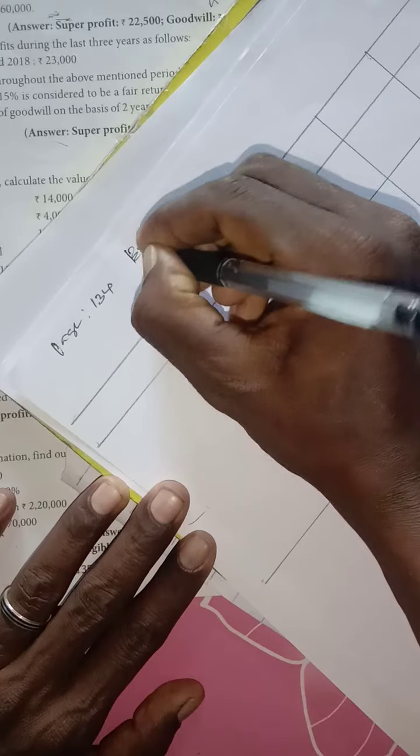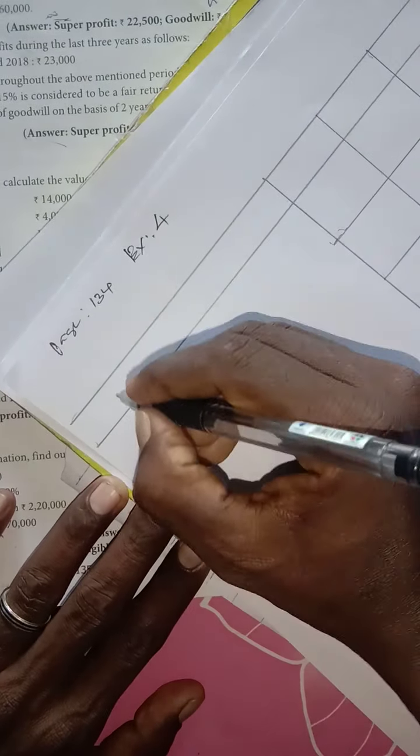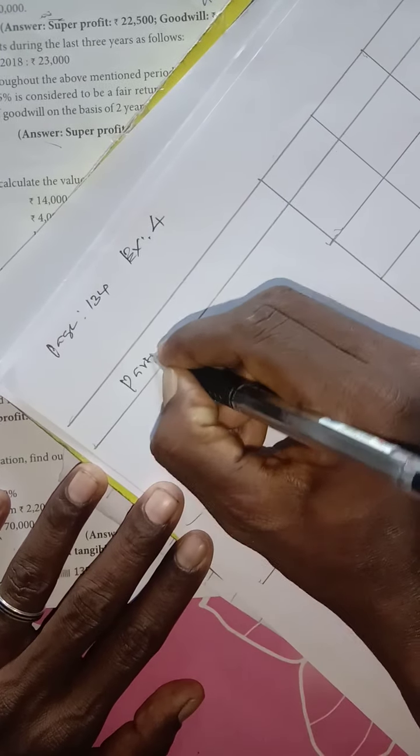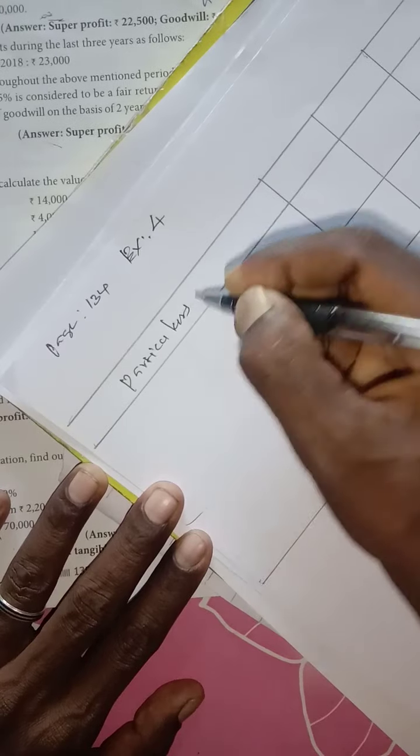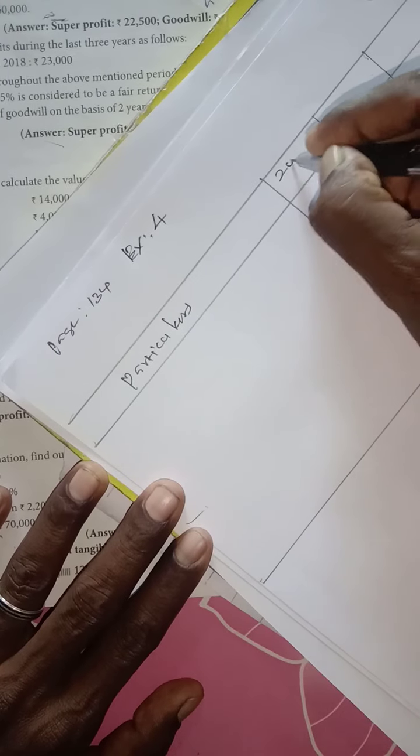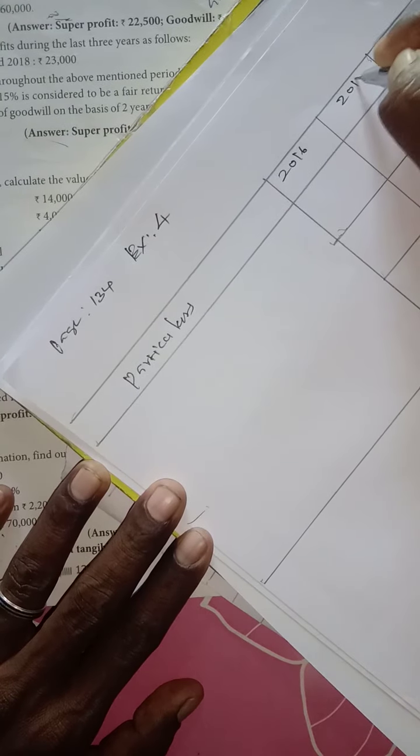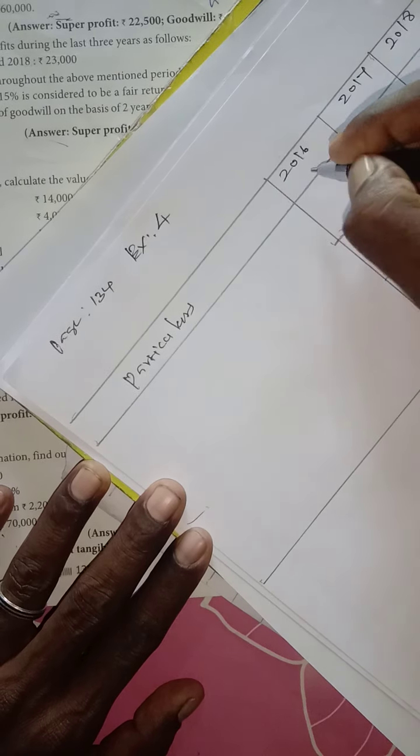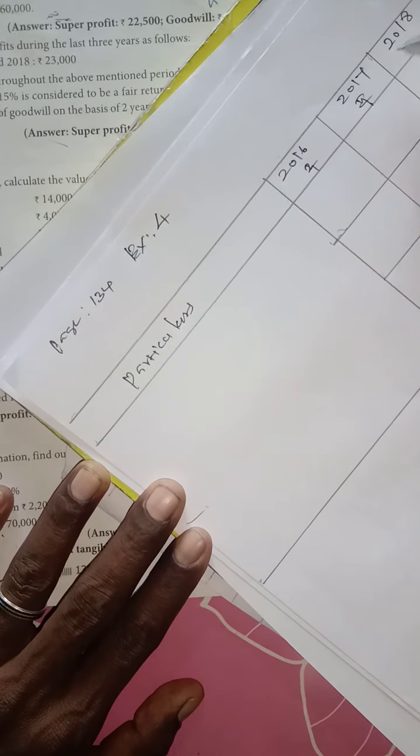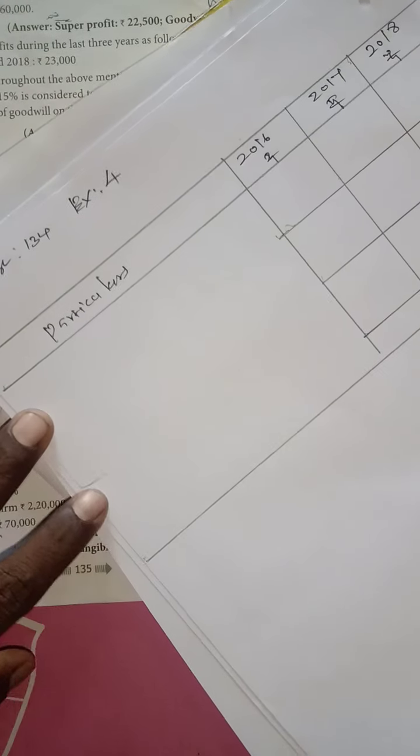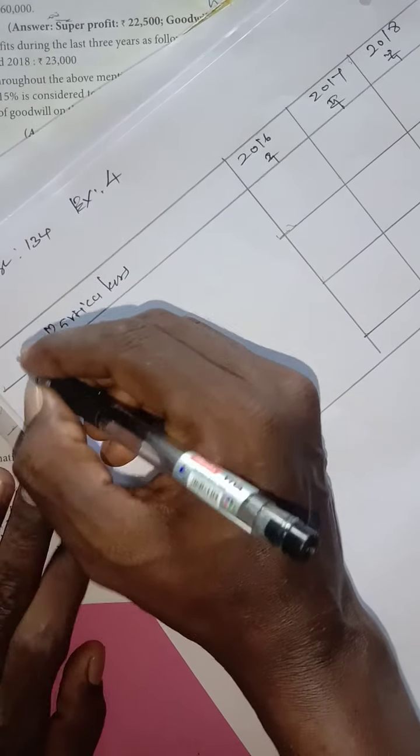Page number 134, axis 4. Now I'll write the particulars. The years are 2016, 2017, 2018 in rupees. First, let me write the initial figures.